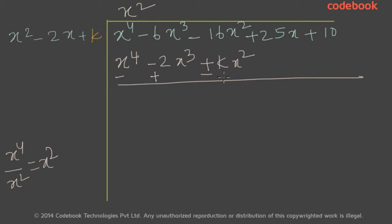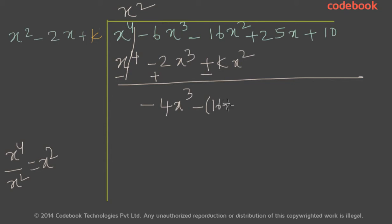Next, subtract these two polynomials, changing the signs: plus becomes minus and minus becomes plus. So x to the power 4 cancels out. Minus 6x cubed plus 2x cubed is minus 4x cubed. Minus 16x squared minus kx squared is minus of (16 plus k)x squared, plus 25x plus 10.